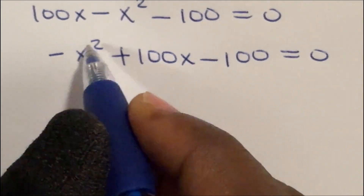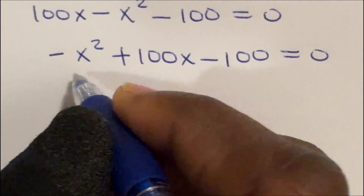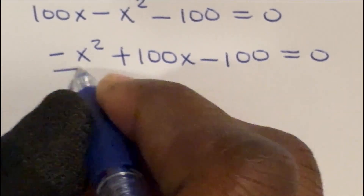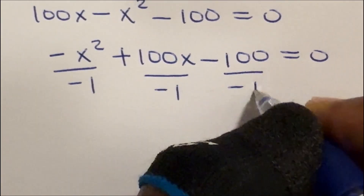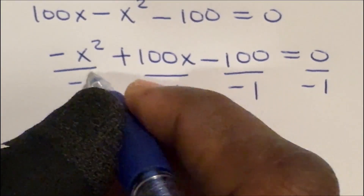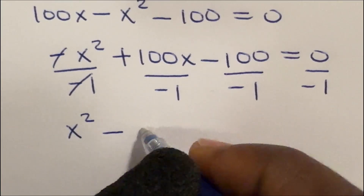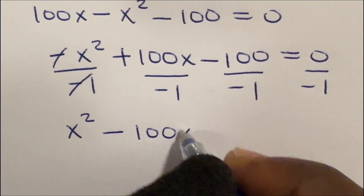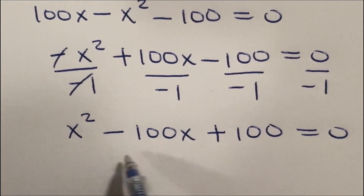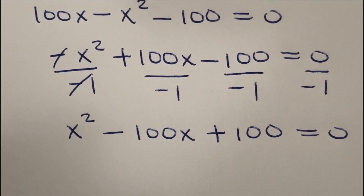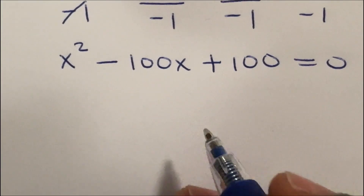Notice that the highest power of x here has a negative coefficient. For that reason, we can multiply through by negative 1 so that this becomes positive. We have x squared minus 100x plus 100 is equal to 0. So we have a quadratic equation, and we check if this is factorizable — otherwise we use the quadratic formula.